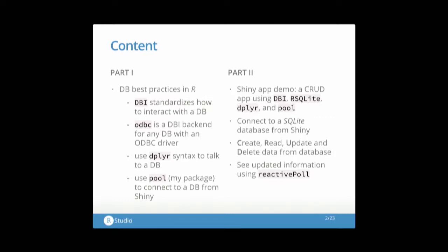Very quickly: DBI is a package that helps you standardize your interactions with the database from R. ODBC is a really powerful DBI backend. Dplyr is probably the package that most of you know — it's great for wrangling and transforming data in a tidy way, and it can be used for databases as well, not only in-memory data but also remote data. And lastly, the pool package is the one I wrote, and it relates most to Shiny — it helps you connect to a database from Shiny using all of these other packages.